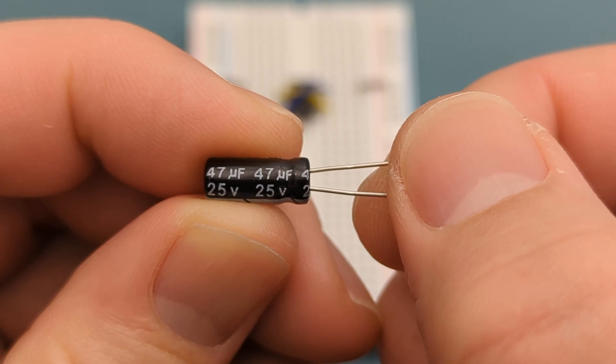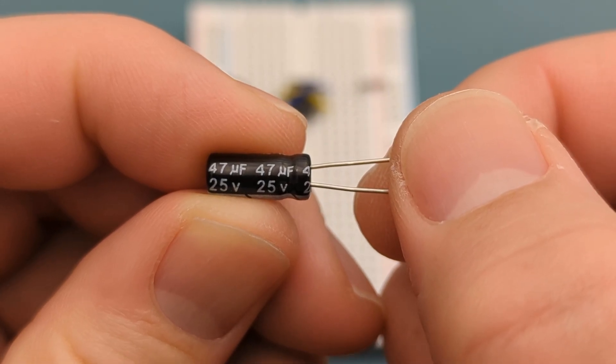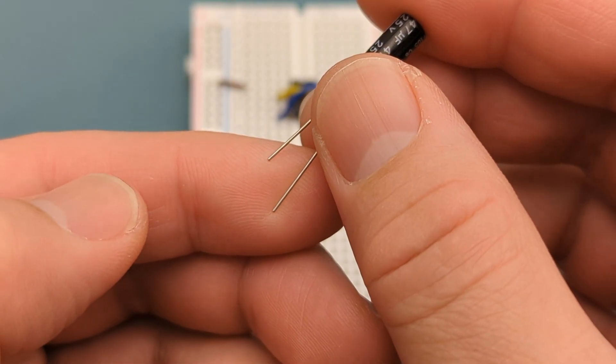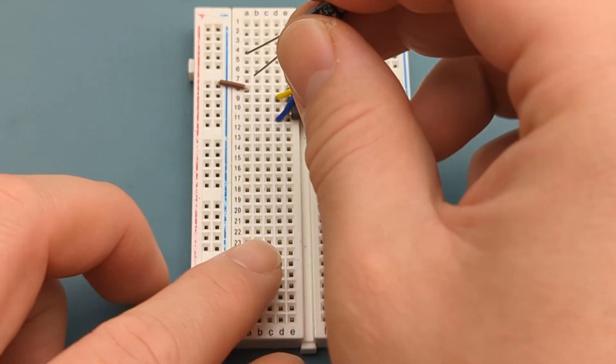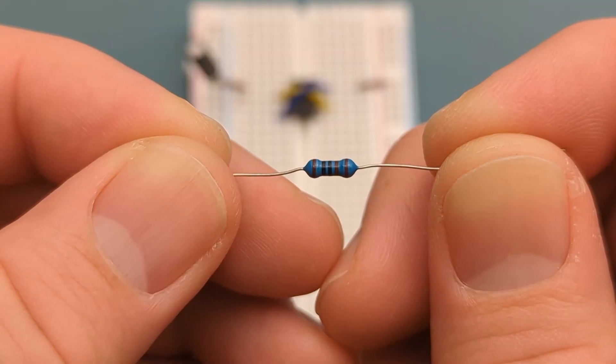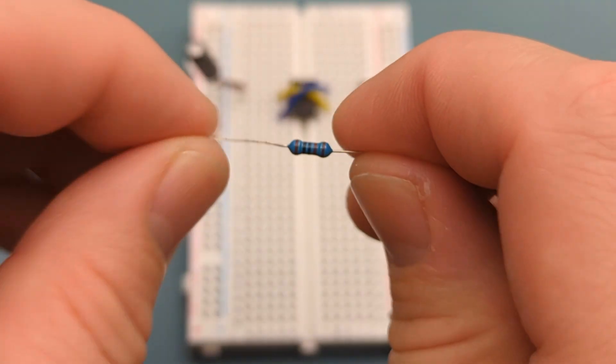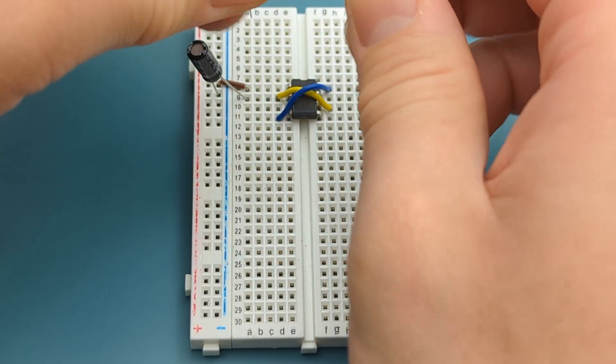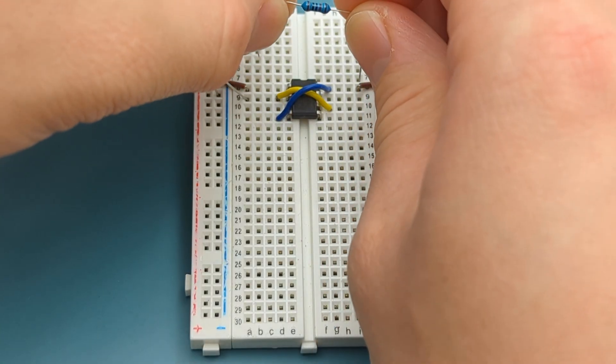Insert a 47 microfarad capacitor into pin 2 or trigger and the negative rail. The anode is in pin 2. Bend the ends of a 10 kilo ohm resistor. Insert a 10 kilo ohm resistor into pin 2 or trigger and pin 7 or discharge.